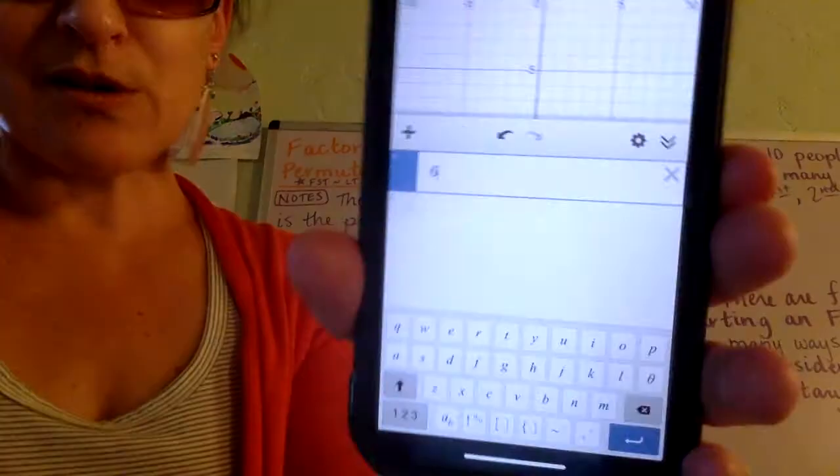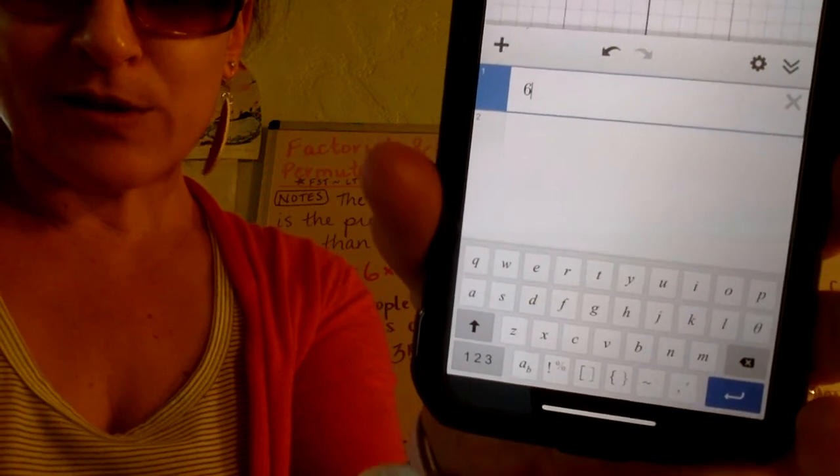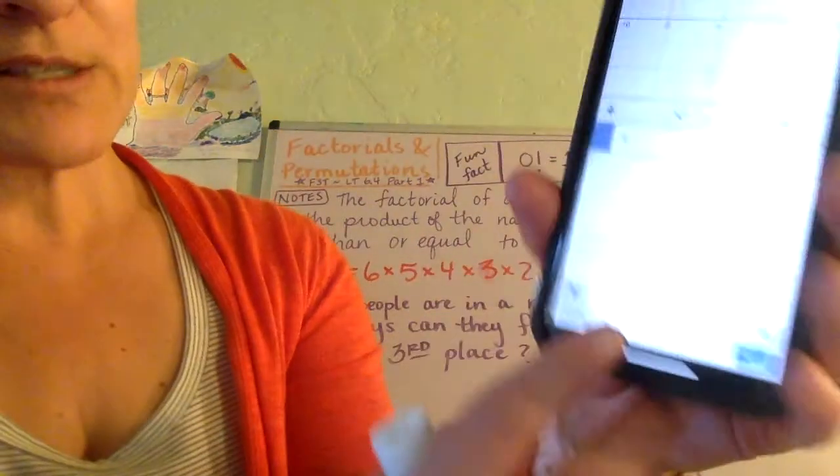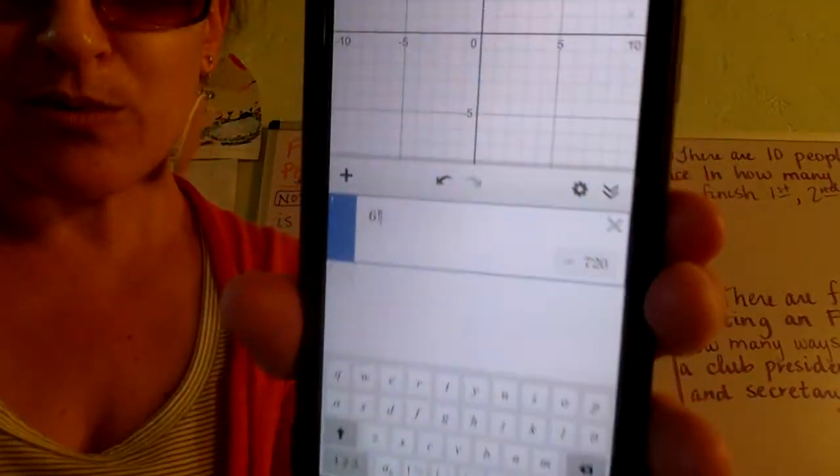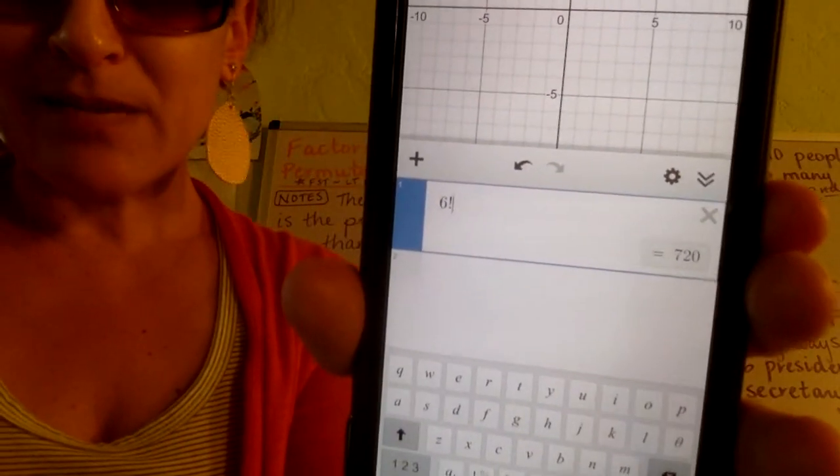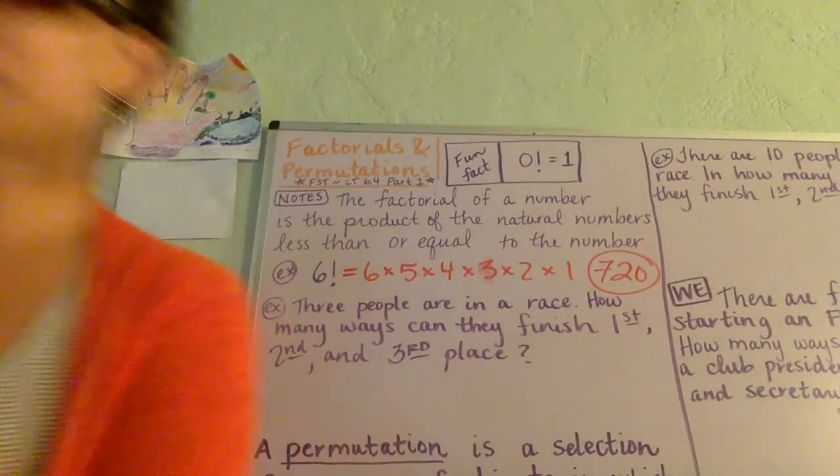Desmos knows, if you just go to the screen where you have the alphabet, of course you can see the exclamation point over here. If you just hit the exclamation point, Desmos knows what that means in math class, and it will also tell you that it is 720.